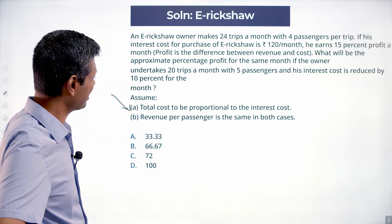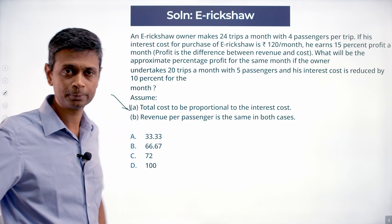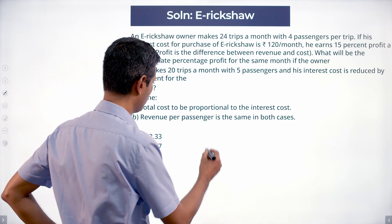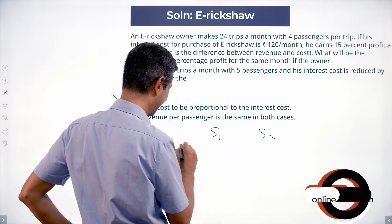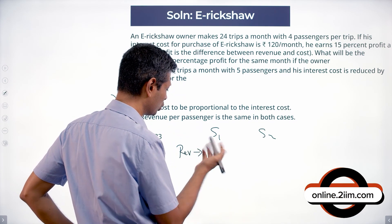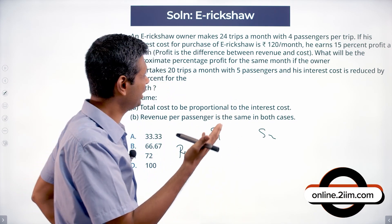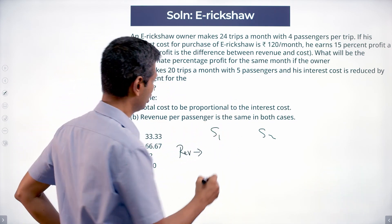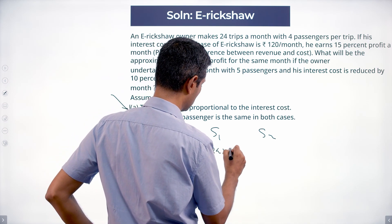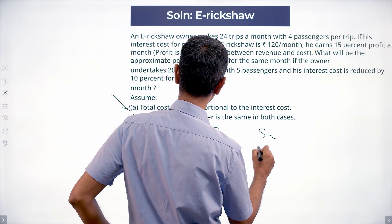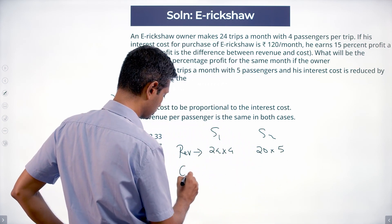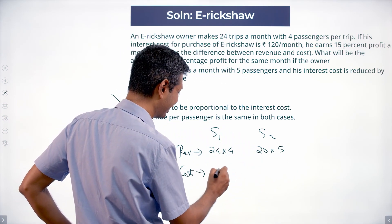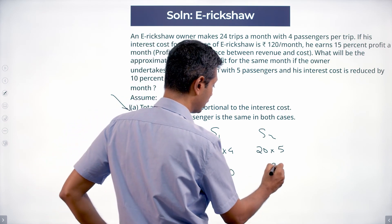Revenue per passenger is the same in both cases. So I'm going to think of it as Scenario 1 and Scenario 2. Revenue is linked to — we don't know how many trips, what they charge — it's 24×4 in Scenario 1, and 20×5 in Scenario 2. For cost: say 100 units in Scenario 1 and 90 units in Scenario 2.